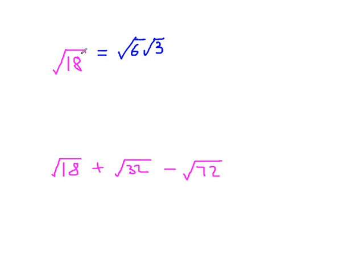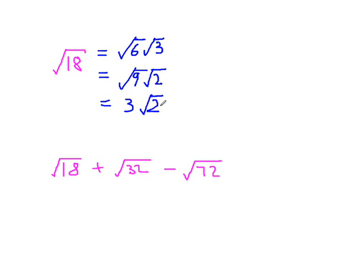So what we're looking for is square numbers that divide into eighteen, because then we can take the square root. And the largest — in fact the only square number other than one that divides into eighteen — is nine. So we factorise eighteen as nine times two. The advantage here is that we can now actually work out what the square root of nine is: it's three. And this tells us that the square root of eighteen is three times the square root of two. This is fully simplified because there is no square number other than one which divides into two.